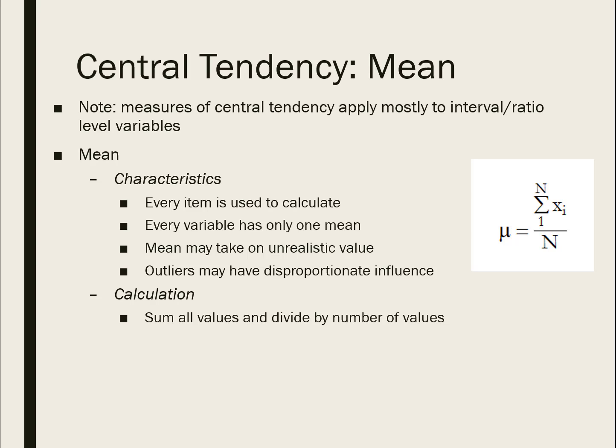The mean uses every value in a variable to calculate the one number that is the mean. It is a type of average. Each variable only has one value for the mean, and sometimes it can take on an unrealistic value. For example, the typical household has 2.3 or 2.5 children. That .3 or .5 is what I mean by unrealistic — there's no such thing as .5 of a person. Because the mean is a mathematical calculation, you can have a decimal place.